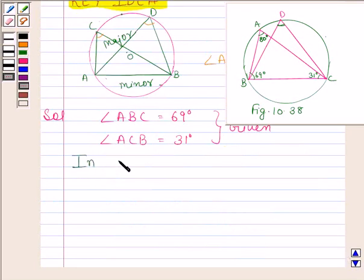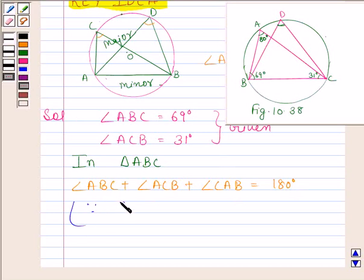angle ABC plus angle ACB plus angle CAB is equal to 180 degrees, because sum of all angles of a triangle is 180 degrees.